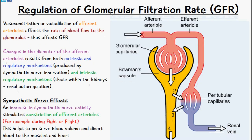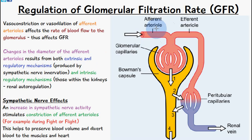If we have vasoconstriction or vasodilation of the afferent arteriole, this would affect the rate of blood flow to the glomerular capillaries and therefore would affect the glomerular filtration rate. So changes in the diameter of the afferent arteriole would affect the glomerular filtration rate.